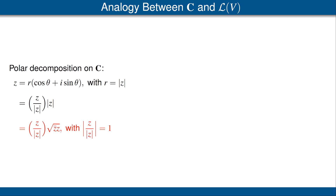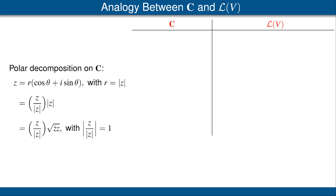Now recall that the complex conjugate of Z times Z is equal to the absolute value of Z squared. Thus the absolute value of Z is the square root of the complex conjugate of Z times Z. So we get the last equation shown here, where we also recorded that the absolute value of that first factor, Z divided by the absolute value of Z, is 1. This may seem a strange way to write the polar decomposition on C, but this is the way that gives the best analogy with operator theory. In previous videos, I have mentioned a few times the analogy between C, the complex numbers, and L of V, the operators on V. Now we're going to be a bit more specific about that analogy, because it will help us a lot with the polar decomposition.